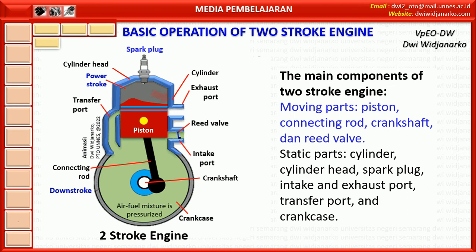The cylinder serves as a place for the piston to move up and down, and houses the cylinder head mount, intake, transfer, and exhaust ports. The cylinder head forms the combustion chamber together with the cylinder and piston. Spark plugs generate sparks to start combustion. The intake port channels the air-fuel mixture from the carburetor or injection system to the crank case through the reed valve. The exhaust port channels combustion gases from the combustion chamber to the exhaust manifold. The transfer port channels the air-fuel mixture from the crank case to the cylinder during the intake or scavenging process. The crank case functions as a suction chamber and temporary shelter for the air-fuel mixture before it is channeled into the cylinder during the intake stroke.